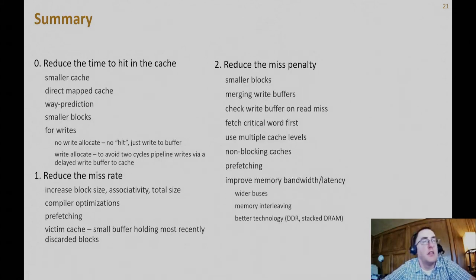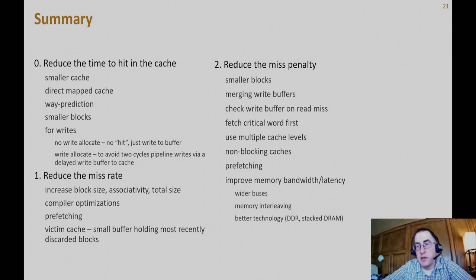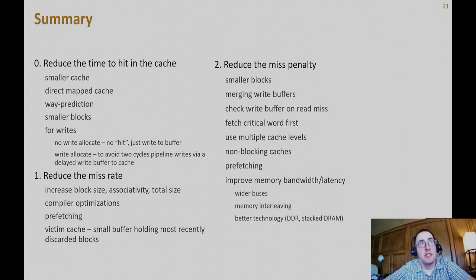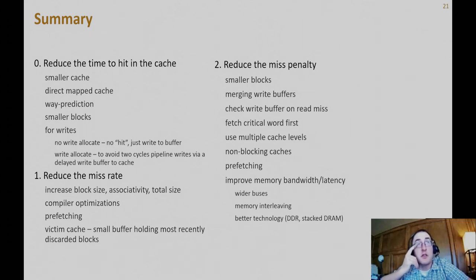We've talked about a lot of cache optimization in a short time. To reduce hit time: use smaller caches, direct-mapped caches, way prediction, and smaller blocks — though smaller blocks increase miss rate. Reducing miss rate may increase hit time or miss penalty; there's always a trade-off. Optimizations for reducing miss penalty include improving the memory technology and reducing how long it takes to go out to memory.